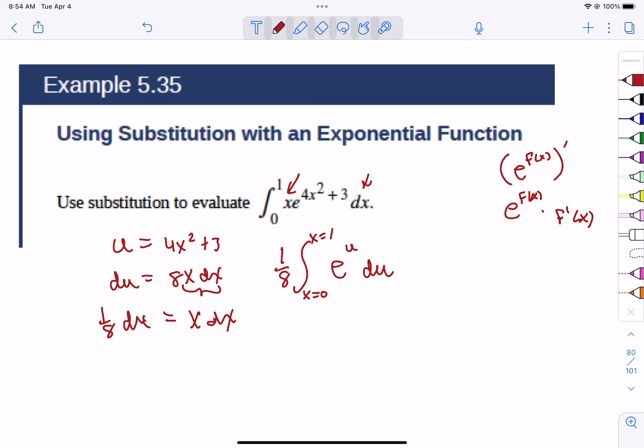So now we have everything ready to go. So the x dx becomes 1/8, we're going to get e to the u du. Now, I put the little x equals 1 and x equals 0 to remind us that our boundaries are x's, not u's. And we can fix that if we want. So this is going to be the derivative of e to the u is e to the u. And so that's going to be 1/8 e to the u.